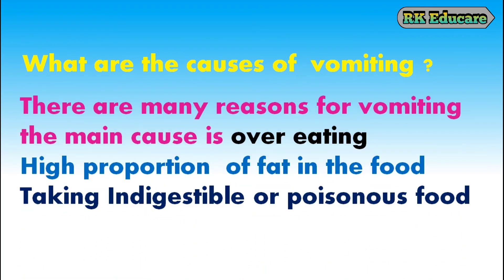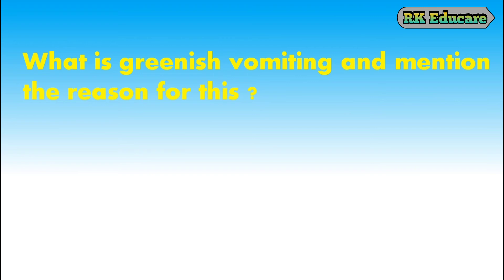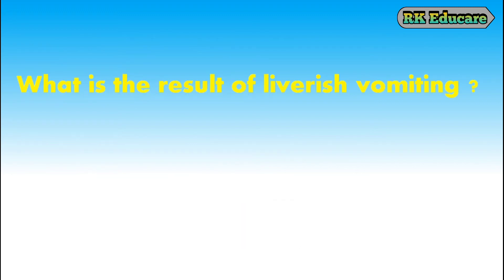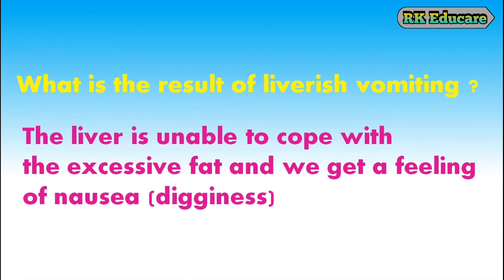What are the causes of vomiting? There are many reasons for vomiting. The main cause is overeating, a high proportion of fat in the food, or taking indigestible or poisonous food. What is greenish vomiting and what is the reason for it? When we have greenish vomit, it is usually called bilious or liverish. We get a bitter taste, and it is often the result of rich meals over several days. The liver is unable to cope with the excessive fat and we get a feeling of nausea or dizziness.